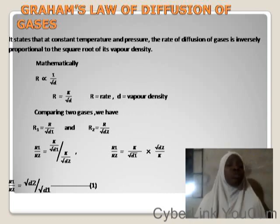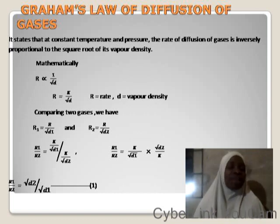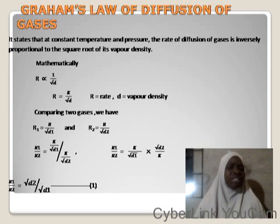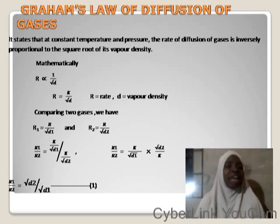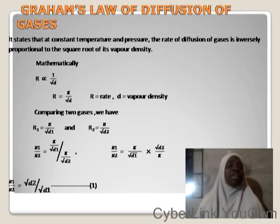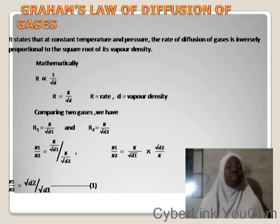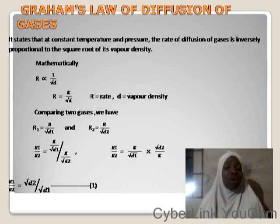We now move to Graham's Law of Diffusion of Gases. The law states that at constant temperature and pressure, the rate of diffusion of a gas is inversely proportional to the square root of its vapor density. Vapor density is defined as how many times a given volume of gas is heavier than the same volume of hydrogen gas at constant temperature and pressure.